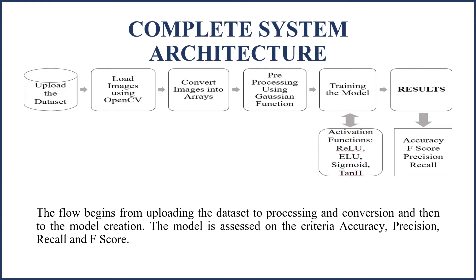Given below is the complete system architecture. The flow is as shown in the diagram. We upload the dataset first, then load the images using OpenCV, pre-process and convert the images into arrays, and after that, we train the model which has 15 layers with the use of activation functions.